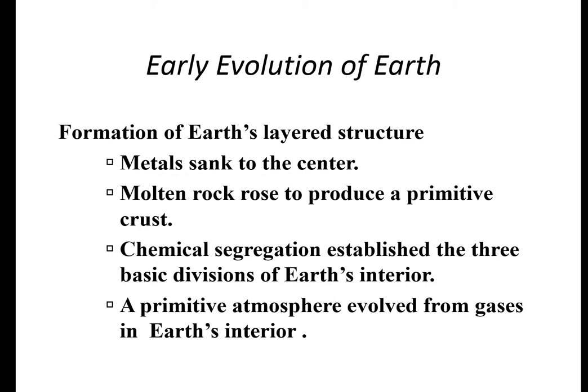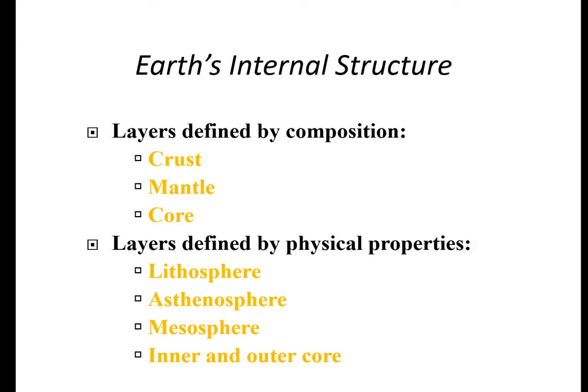Let's look at the structure of the Earth. In the formation of the Earth, it formed in layers: metals sank to the center to form the core, molten rock rose to produce a primitive crust, and we have a mantle that behaves like a plastic — it flows when warm and is solid when cold. Chemical segregation established three basic divisions: the core, mantle, and crust. A primitive atmosphere also evolved from gases outgassing from the interior. We live on the crust, which is the thinnest layer — like the skin on an apple. The mantle is like the meat of the apple, and the core is like the seeds deep in the middle. We can define these layers by physical properties: the lithosphere, the asthenosphere, the mesosphere, and the inner and outer cores.